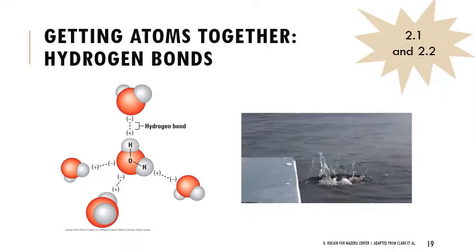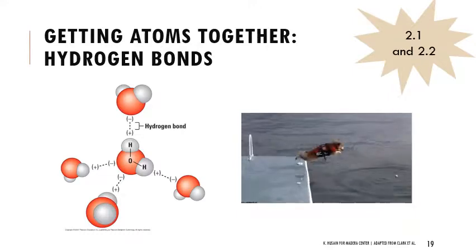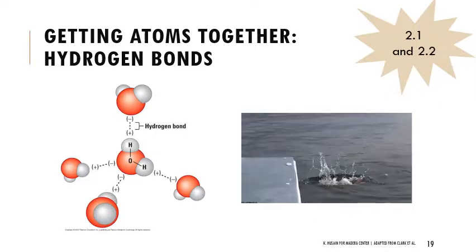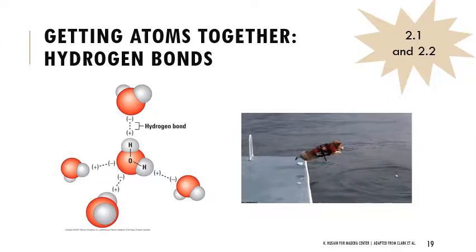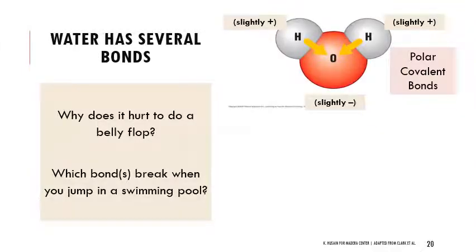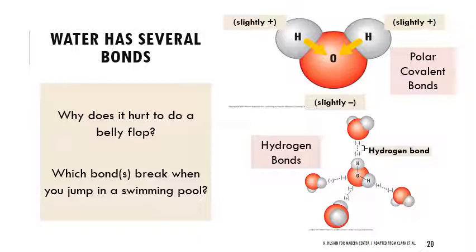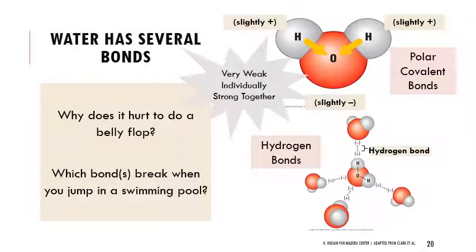Those individual hydrogen bonds are fairly weak. The reason I'm showing you this gif of a corgi belly flopping is because that slap when it hits the water has to do with hydrogen bonds. Water has two different types of bonds: the polar covalent bonds within the molecule, and the hydrogen bonds between molecules. The reason why it hurts to belly flop — the bonds you break when you jump into a swimming pool — are not those very strong polar covalent bonds within the water molecule. It's the relatively weak hydrogen bonds between molecules. Individually they're very weak, but they are relatively strong together, and those hydrogen bonds end up conferring a lot of very unique properties to water.